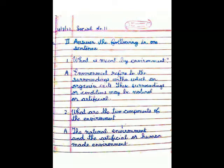Question 1: What is meant by environment? Environment refers to the surroundings within which an organism exists. These surroundings or conditions may be natural or artificial.